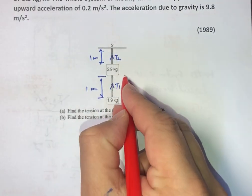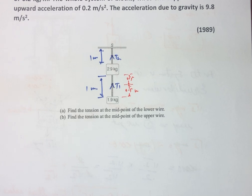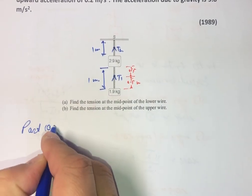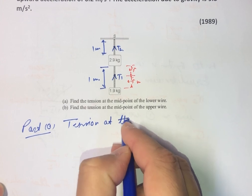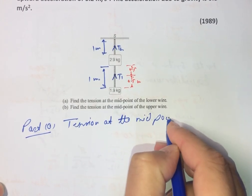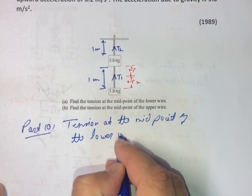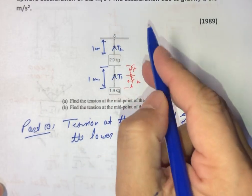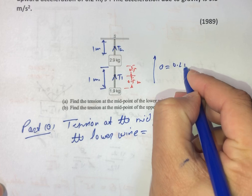Let us consider Part A: the tension at the midpoint of the lower wire. Let us call this tension T1. It is given that the entire system is moving upward with acceleration a, which is 0.2 m/s².